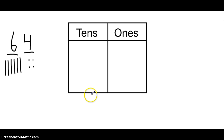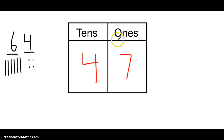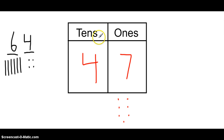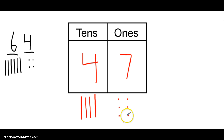If I have the number 47, the seven is in the ones place, so I would have seven ones cubes. The four is in what we call the tens place, so I'd have four longs — four tens. I represented the number 47 using tens longs and ones cubes.